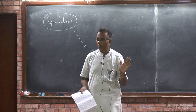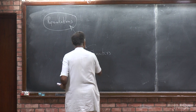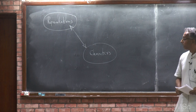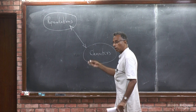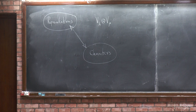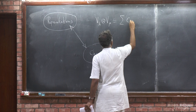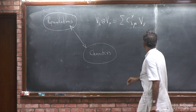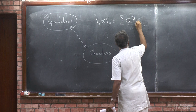So, suppose I have two irreducible representations V_lambda and V_mu. I want to take their tensor product and decompose it as a direct sum of irreducible representations. This is usually written as a sum over nu of C_{lambda,mu,nu} times V_nu, where C_{lambda,mu,nu} is the number of copies of V_nu occurring in the tensor product V_lambda tensor V_mu.